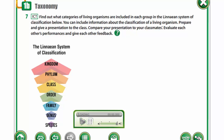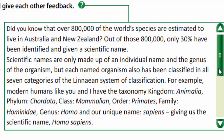In exercise 7, find out what categories of living organisms are included in each group in the Linnaean system of classification. Did you know that over 800,000 of the world's species are estimated to live in Australia and New Zealand? Out of those 800,000, only 30% have been identified and given a scientific name. Scientific names are made up of an individual name and the genus of the organism, but each named organism has also been classified in all seven categories of the Linnaean system.